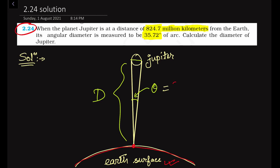So this angle theta is equal to 35.72 seconds, expressed in the second scale. Now we have to convert it into radians. The given values are: capital D is equal to 824.7 million kilometers, that is 824.7 × 10⁶ kilometers. These are the given information in this question, and we have to calculate the diameter of Jupiter.